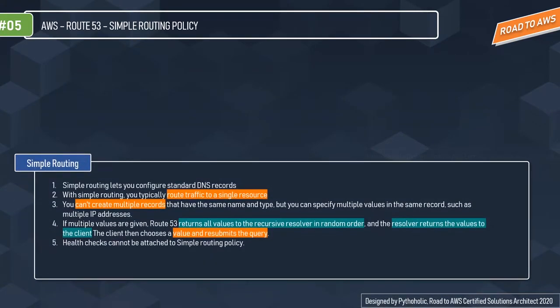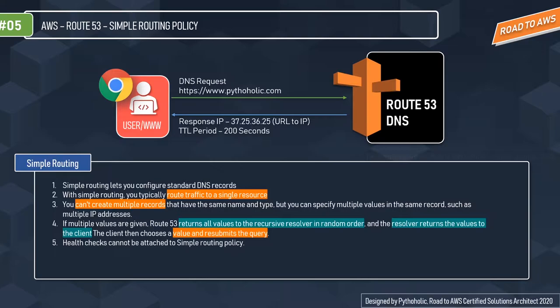Simple routing policy is pretty simple. It lets you configure standard DNS records, and you typically route traffic to a single resource. You set a record and route traffic to the URL based on the record type. You can't create multiple records with the same name and type, but you can specify multiple values in the same record, such as multiple IP addresses. If multiple values are given, Route 53 returns all values to the recursive resolver in random order.